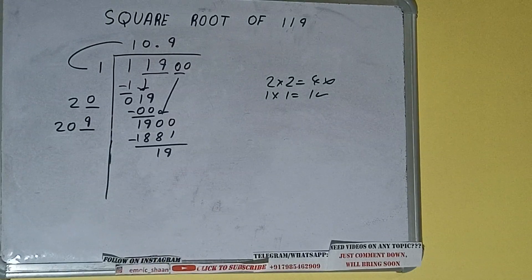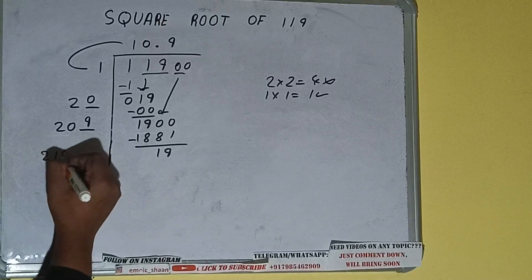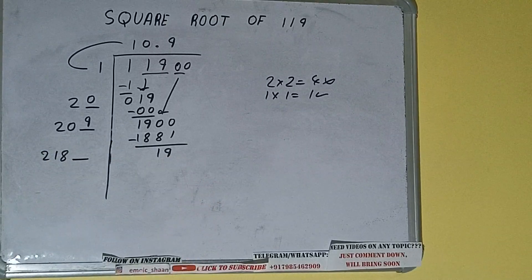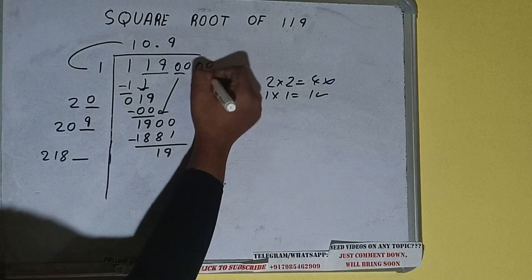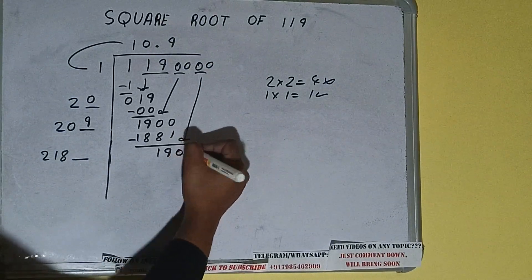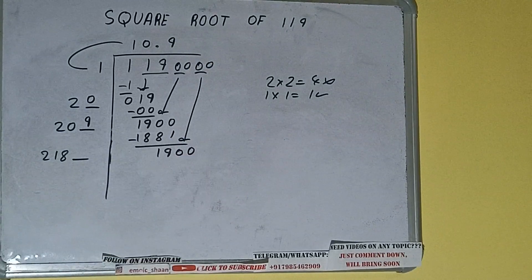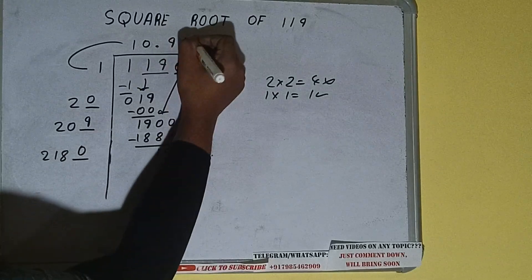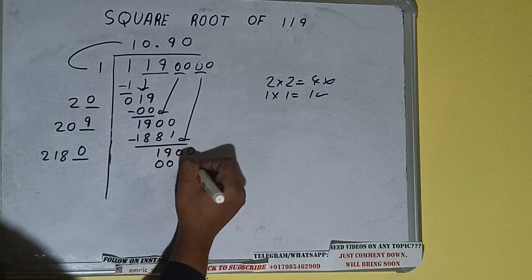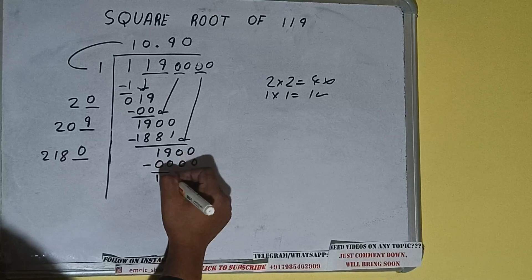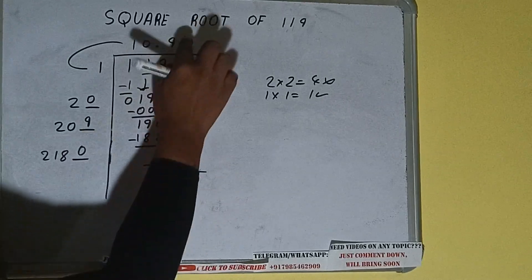And this number we need to make it big, so bring the next pair of zeros down and it will be 1900. So we can write 0 here and 0 here. 1900 will be left. 2180 into 0 we did, so add both. 2180 plus 0 will be again 2180.